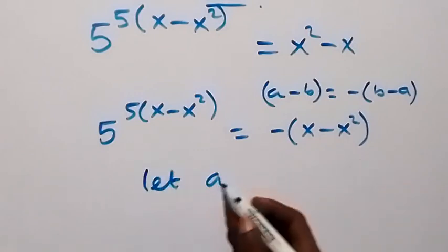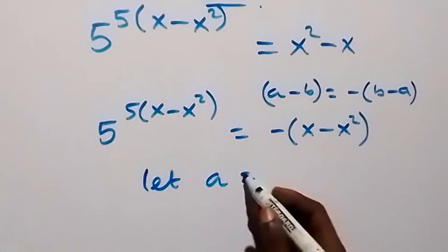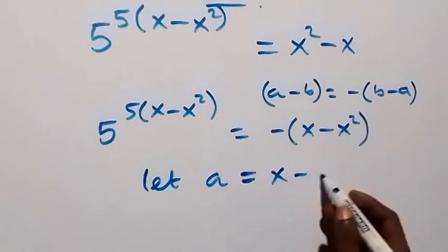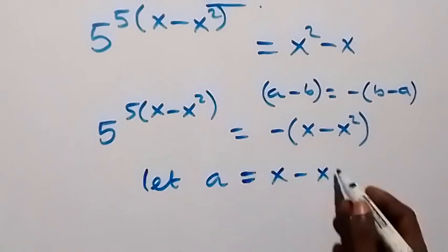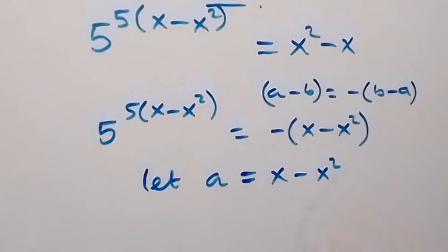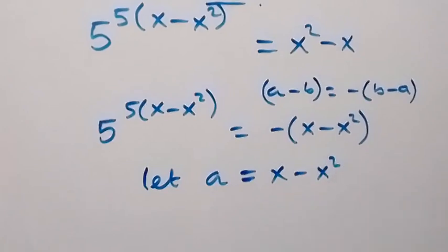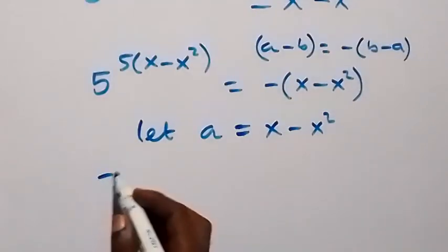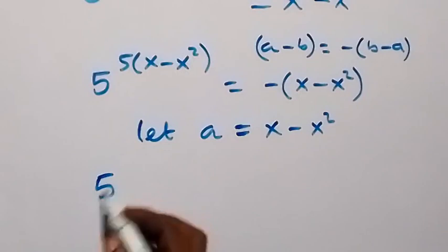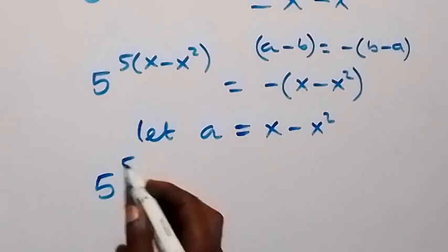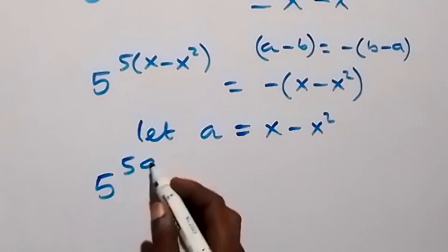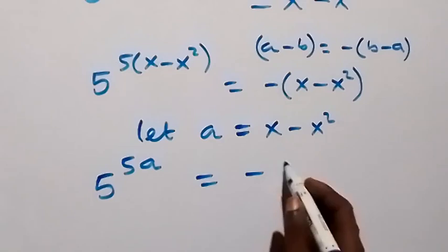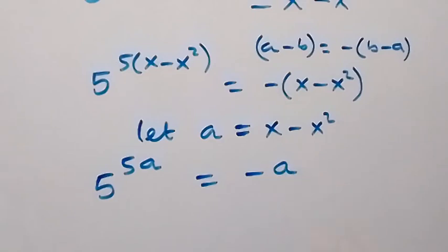Let a equals to x minus x squared. Then this equation becomes 5 raised to power 5 into a, then equals to minus a.